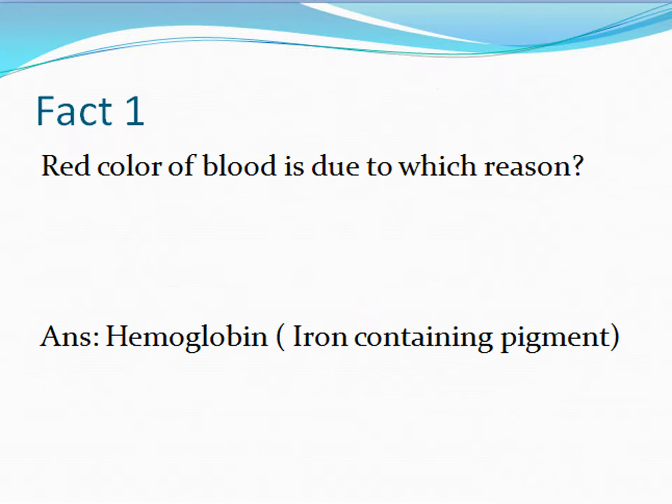First question: the red color of the blood is due to which reason? The answer is the red color of the blood is due to an iron-containing pigment known as hemoglobin.